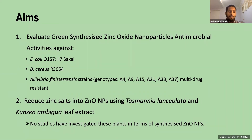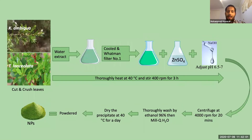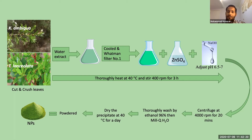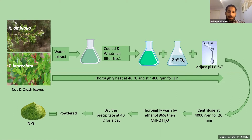Now let's see how we made it. This slide shows how I made the green synthesis of zinc oxide nanoparticles. The method was optimized to obtain the best result because we first used a coffee machine but it did not work. Then I boiled the plant leaves to get the extract from them, and I adjusted the pH to approximately 6.5 to 7 for all the nanoparticles.